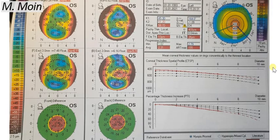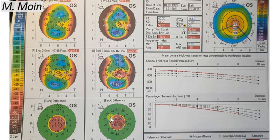On the Belin-Ambrosia Enhanced Display for the left eye, the normal and enhanced elevation maps are shown for both front and back surfaces. The posterior surface shows a more significant conical shape than the anterior surface. The enhanced elevation values are plus 14 anteriorly and plus 35 posteriorly. The D value for this eye is 7.81, compared to approximately 6-point-something in the right eye. The pachymetry progression index shows thickness increasing from 400 microns centrally to 600 microns peripherally, but the percentage increase is out of the normal range, definitively confirming keratoconus in this eye.